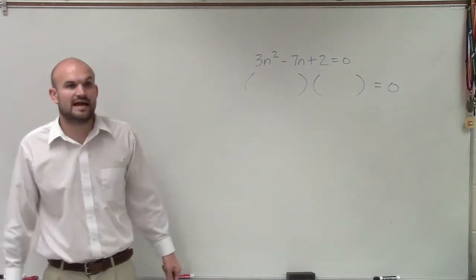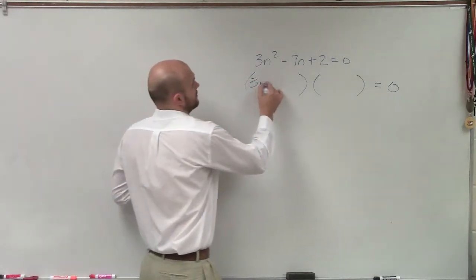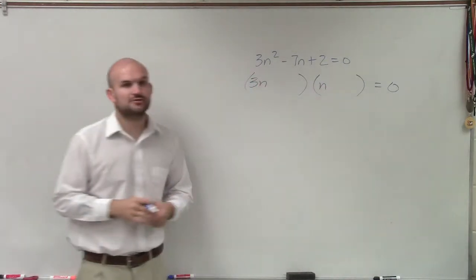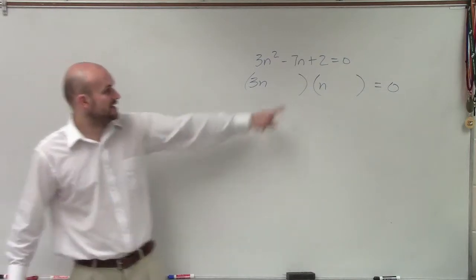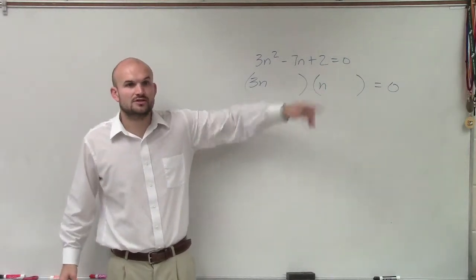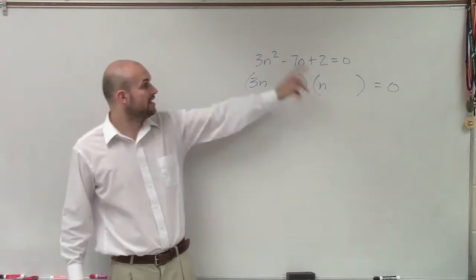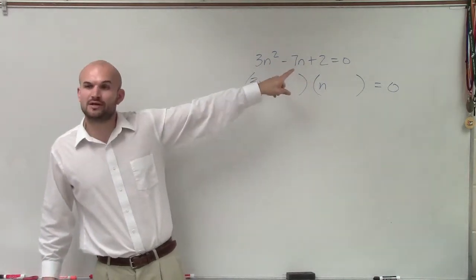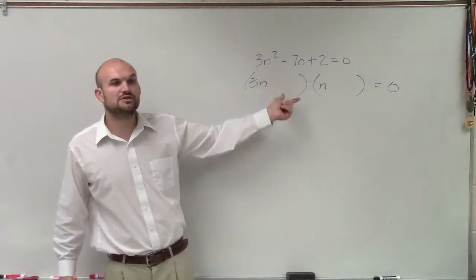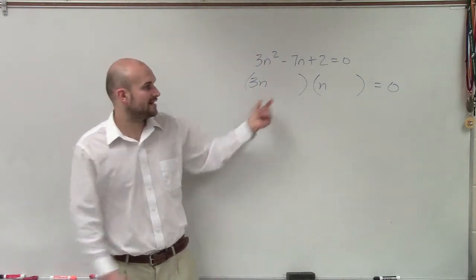We know the first two terms again have to be 3n and n. And we know my last two terms have to multiply to give me a positive 2. So it's either positive 2 and positive 1, or negative 2 and negative 1. However, I look at my middle term and I know my middle term is negative. Therefore, I know these two factors have to be negative.